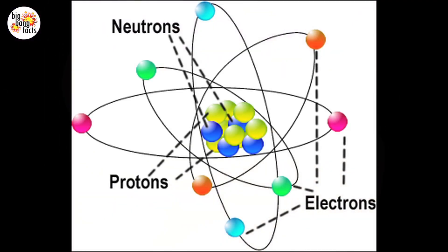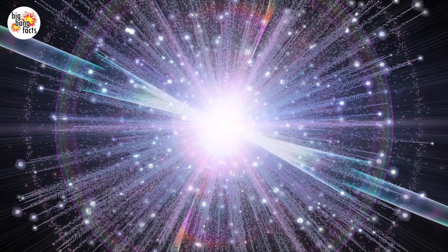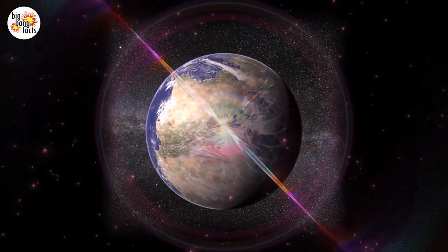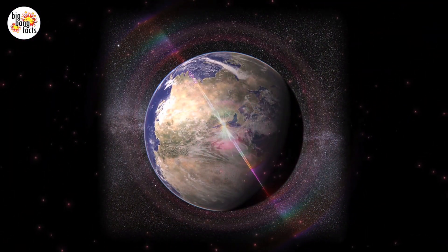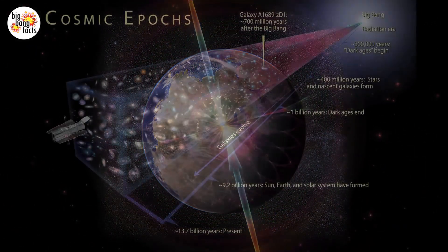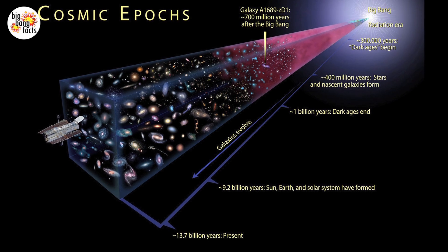More stable particles called protons and neutrons started to form when the universe was one second old. Over the next three minutes, the temperature dropped below one billion degrees Celsius. It was now cool enough for protons and neutrons to come together, forming hydrogen and helium nuclei. After 300,000 years, the universe had cooled to about 3,000 degrees.